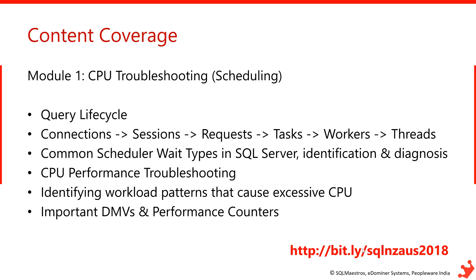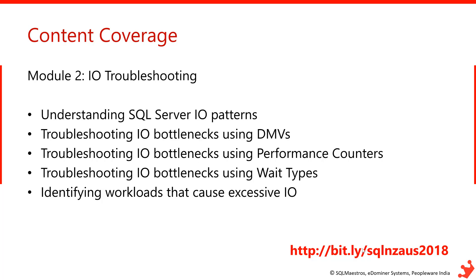We will look at various workload patterns that cause excessive CPU cycles and focus on important DMVs and performance counters. Module 2 focuses on IO troubleshooting. IO is very critical for any database, and I will cover troubleshooting IO performance using dynamic management views, various performance counters, and dive deep into specific wait types such as page IO latch, write log, and IO completion. I will also show you how to identify workloads causing excessive IO and various remedies you can implement.